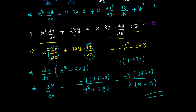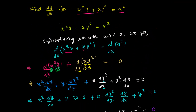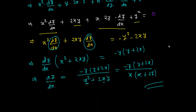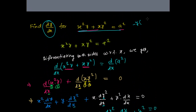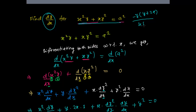So this is our derivative. We found dy over dx, which is what the question asked for. The answer is: dy over dx equals minus y times (y plus 2x), divided by x times (x plus 2y). This is our derivative for the given equation.